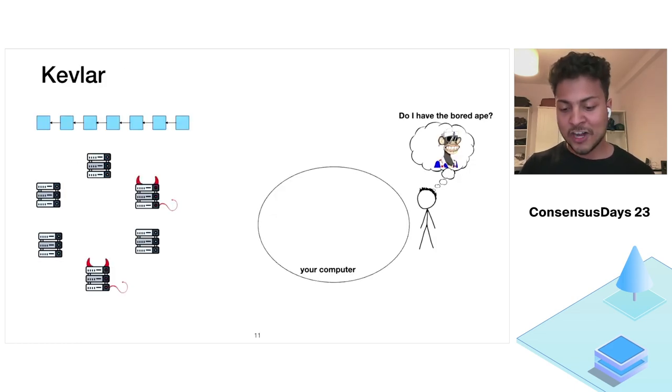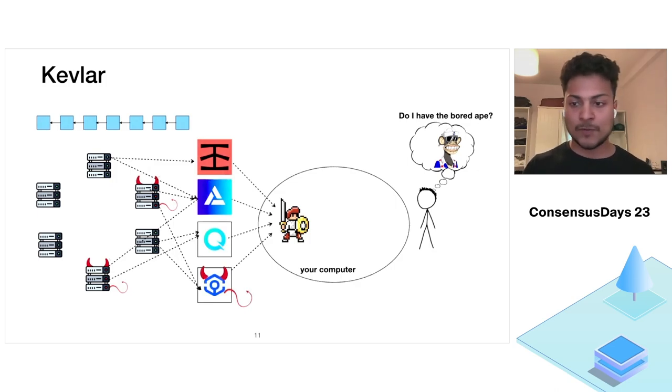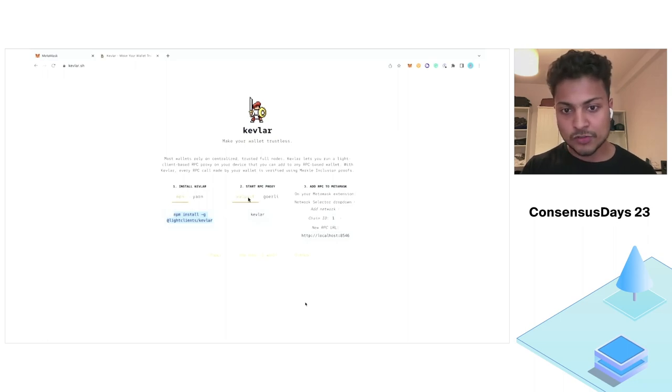Not only did we propose this theoretical construction, but we actually built the construction out as an open source tool to protect existing users' wallets. This tool is called Kevlar and Kevlar connects to multiple RPC providers to efficiently sync to the latest state of the chain. And then Bob can simply use his everyday wallet such as Metamask, connect to Kevlar, which starts a local RPC server. And now every query that Bob makes is verified using Kevlar. So as long as one RPC provider is honest, Kevlar will make sure that the wallet gets the right data.